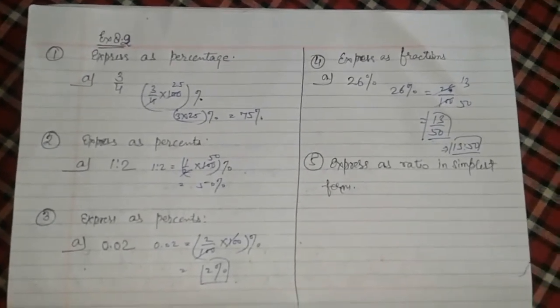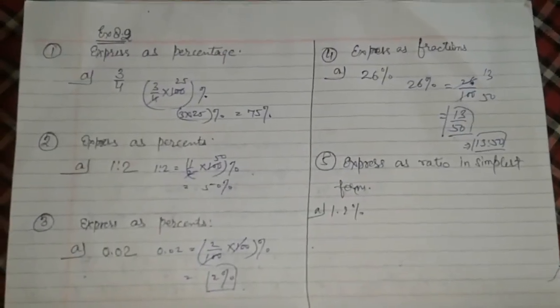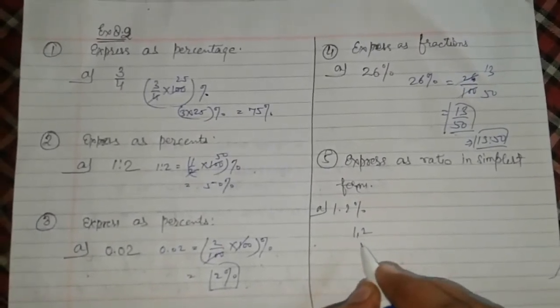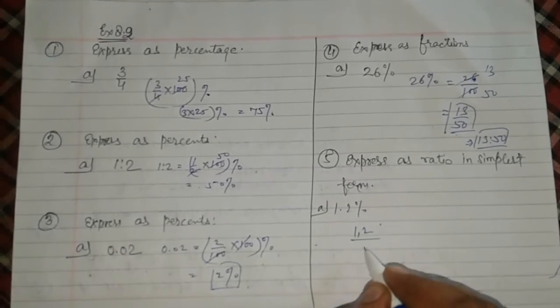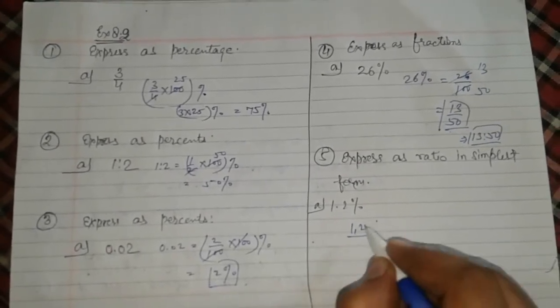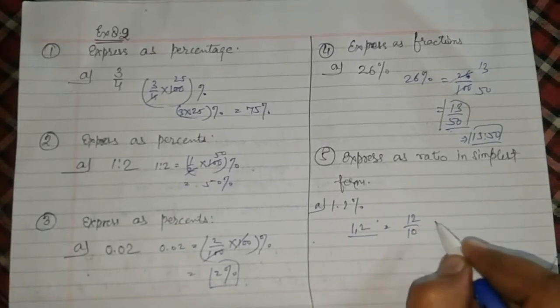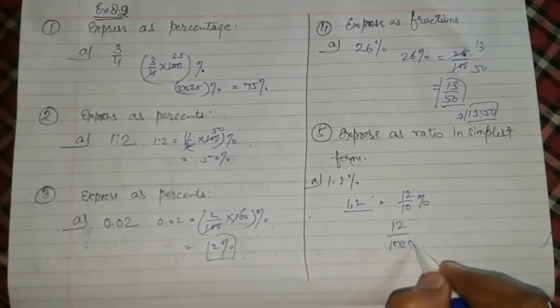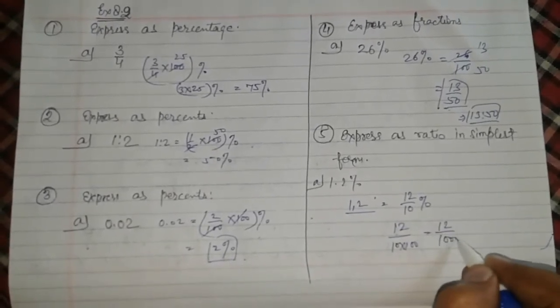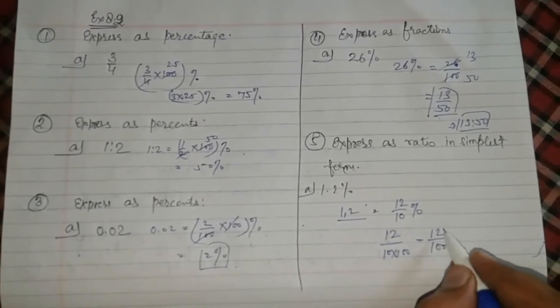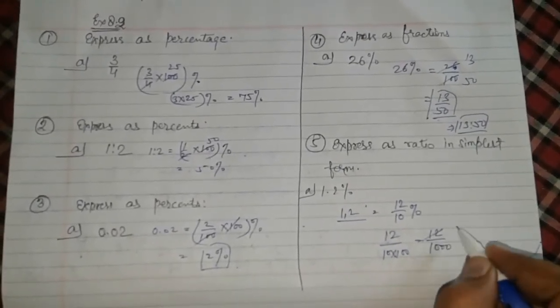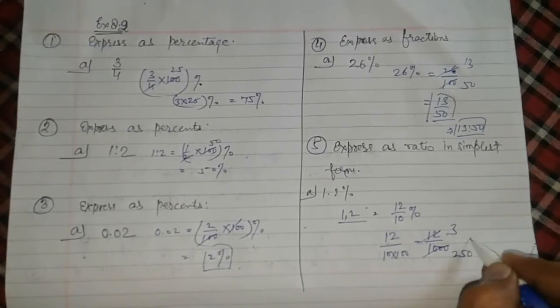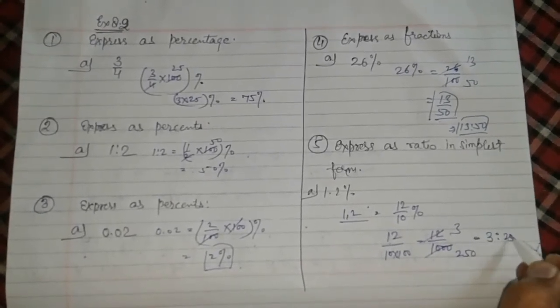Express as ratio in simplest form. Let me write a question. 1.2%. For that at first, 1.2 is written as 12 upon 10. Then percent, 12 upon 10 multiply by 100. 12 upon 1000. GCF in this is 4. 4 times 3 is 12 and 4 times 250 is 1000. So 3 ratio 250.